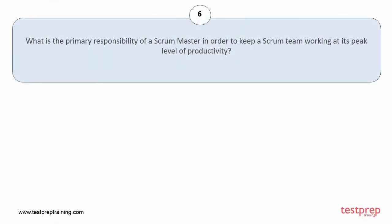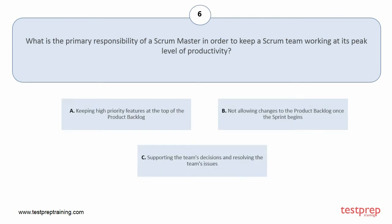Question number 6: What is the primary responsibility of a scrum master in order to keep a scrum team working at its peak level of productivity? Your options are: A, keeping high priority features at the top of the product backlog; B, not allowing changes to the product backlog once the sprint begins; C, supporting the team's decisions and resolving the team's issues. The correct answer is option C.